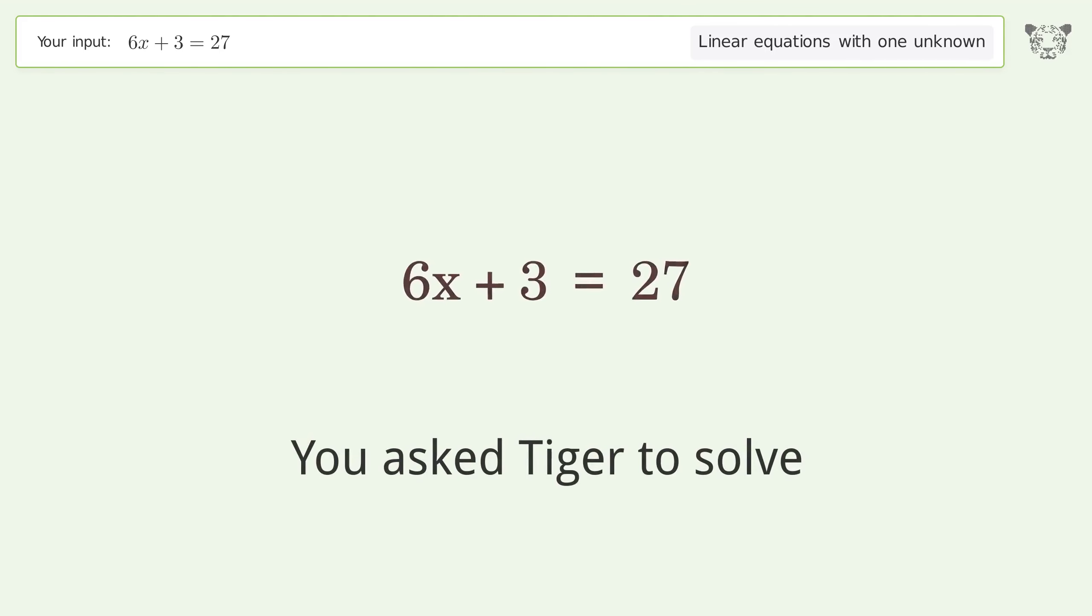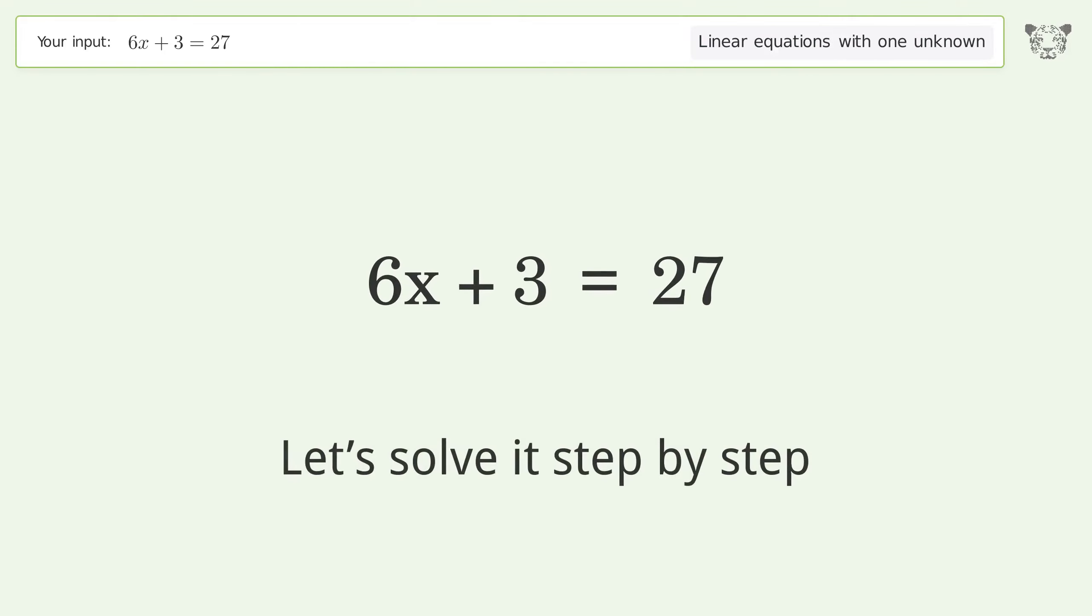You asked Tiger to solve. This deals with linear equations with one unknown. The final result is x equals 4. Let's solve it step by step.